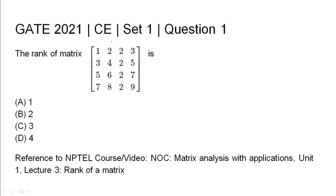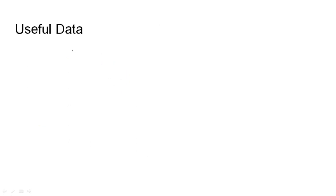GATE 2021 Civil Engineering Set 1, Question 1: the rank of a 4×4 matrix needs to be found. The options are given as 1, 2, 3, and 4. The relevant NPTEL reference has been listed.